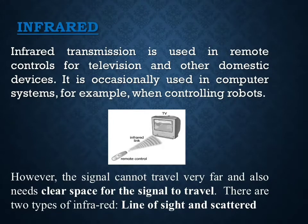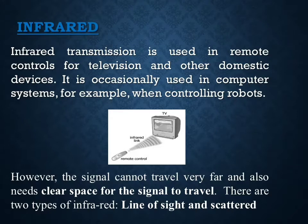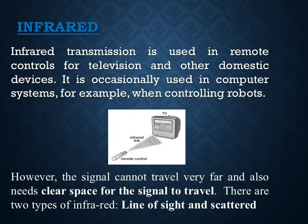Infrared transmission is used in remote controls for televisions and other domestic devices such as DVD players, VCRs, and video game controllers. It is also occasionally used in computer systems, for example when controlling robots. Looking at the image, you can see a remote control pointed directly at a TV — you need clear space for signals to travel. There are two types of infrared: line of sight, where the remote points directly at the device, and scattered, where the signal bounces off surfaces like a wall or mirror.